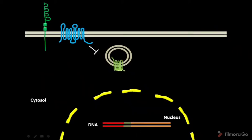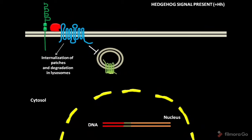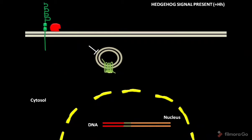In presence of protein Hedgehog, the signal binds to the IHOG and PATCHED. After this binding, the PATCHED is internalized and degraded in the lysosome. As a result, the inhibition of Smoothened by PATCHED is removed.